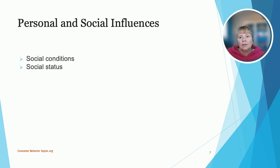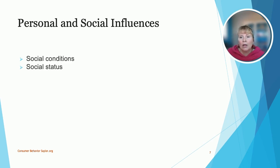Many things influence what products a consumer may buy. These include a strong economy, social conditions, social status, social class, and the amount of disposable income a consumer has. The higher the social class, the more money a consumer may spend. Other influences may include cultural, personal, or psychological factors, and it's important that a marketer understand how these influences affect the buying process.